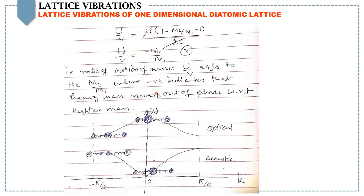Based on the results of equation 6, we can now summarize the dispersion relation. At k equals 0 in the acoustic branch, both masses vibrate with the same amplitude. At k equals ±π/a in the acoustic branch, the lighter mass remains at rest but the heavy masses vibrate. At k equals 0 in the optical branch, both masses vibrate out of phase with each other. At k equals ±π/a in the optical branch, the heavy mass remains at rest but the lighter masses vibrate.